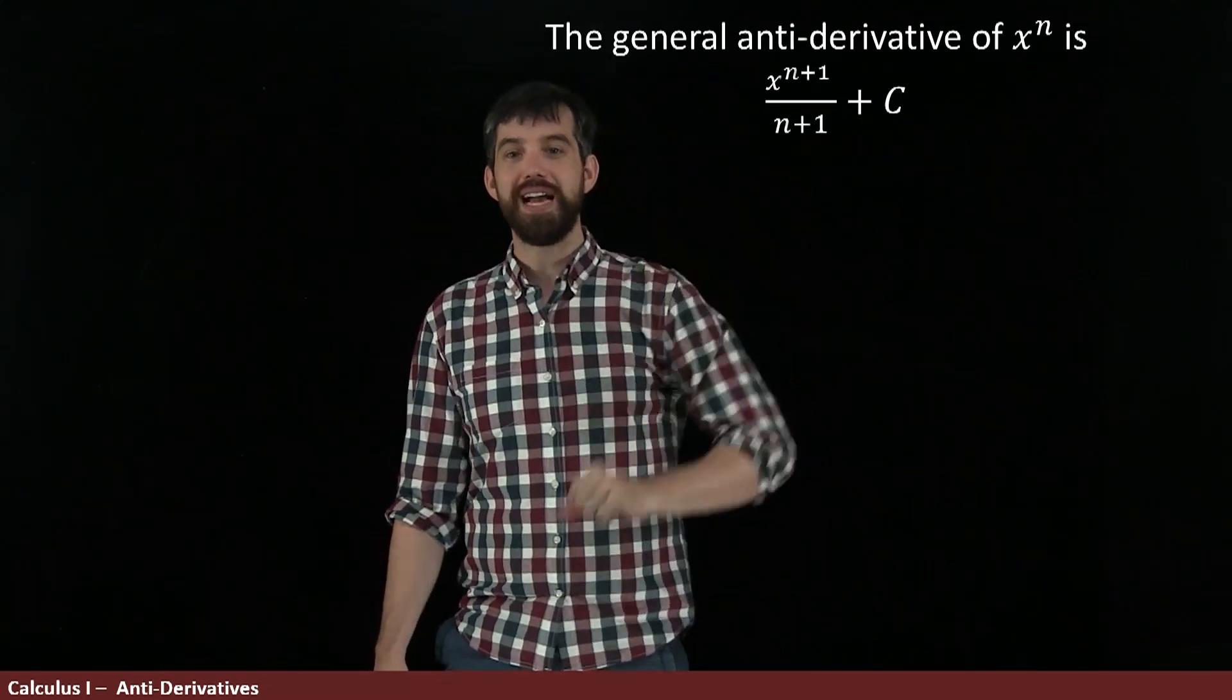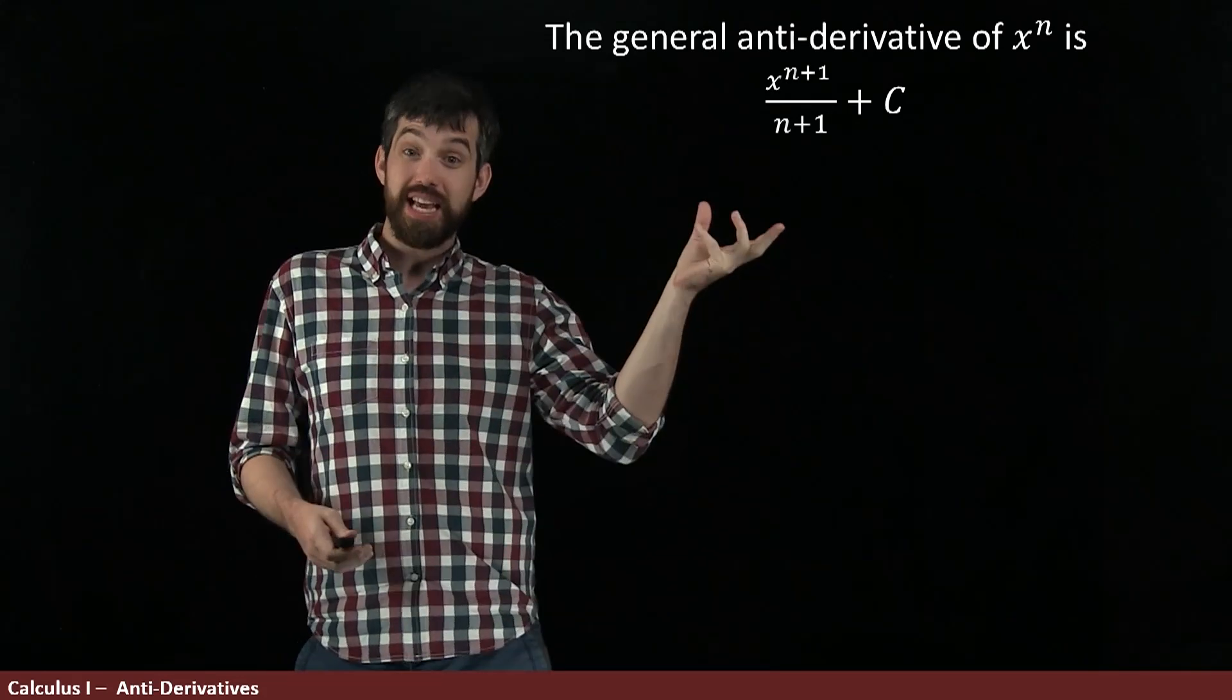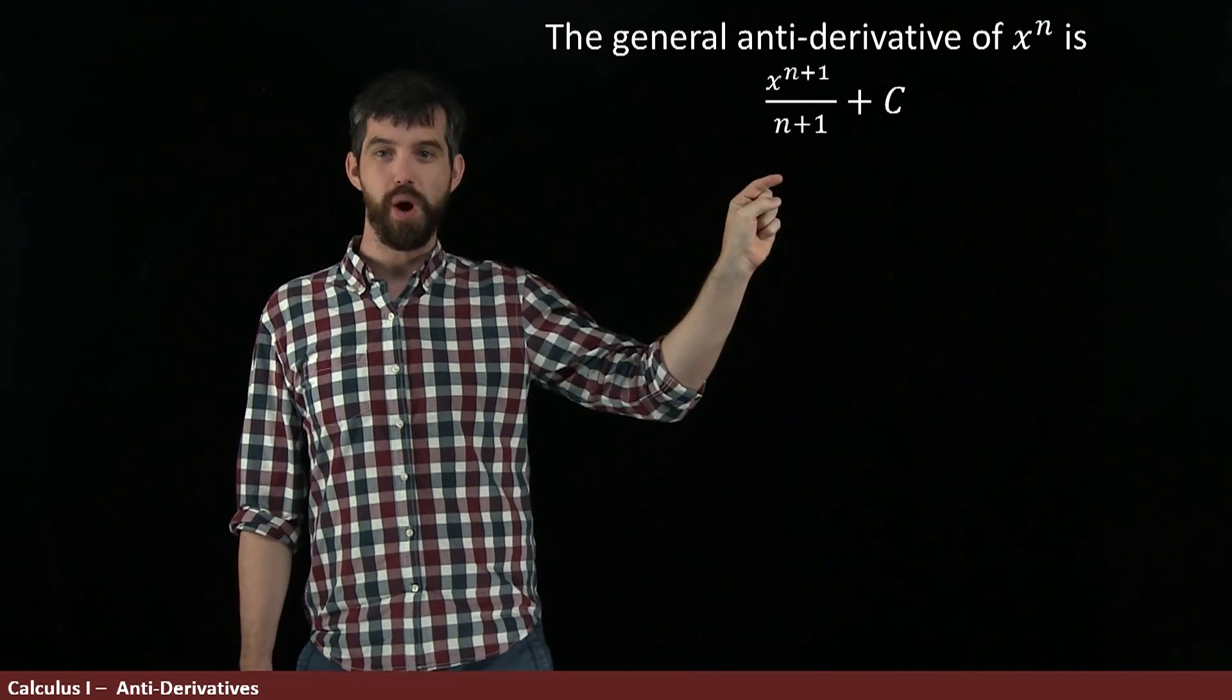Now, we've already investigated what the antiderivative was for 3x squared, but I want to look generally at the antiderivative of just some function x to the n. And my claim is that the antiderivative looks like this. The general form of the antiderivative is x to the n plus 1 all over n plus 1 plus c.